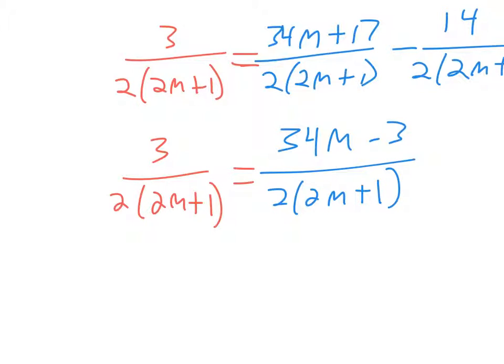And so again, since these denominators are the same, the only way this equation is going to be true is if 3 equals 34m minus 3, if the numerators are the same.